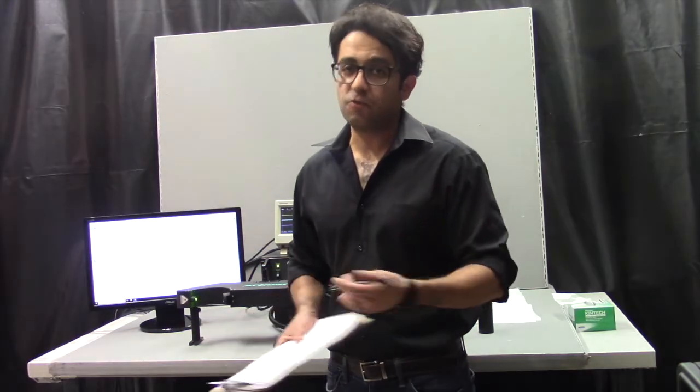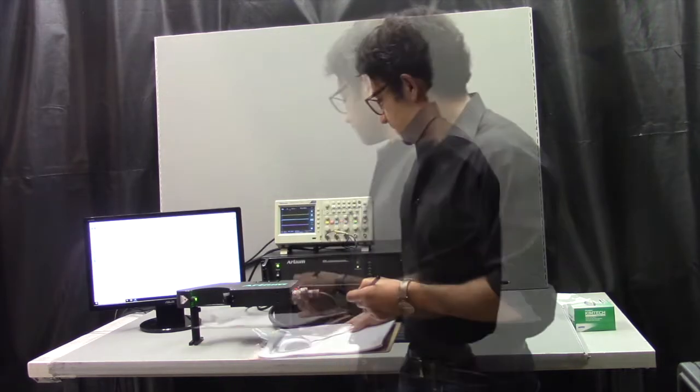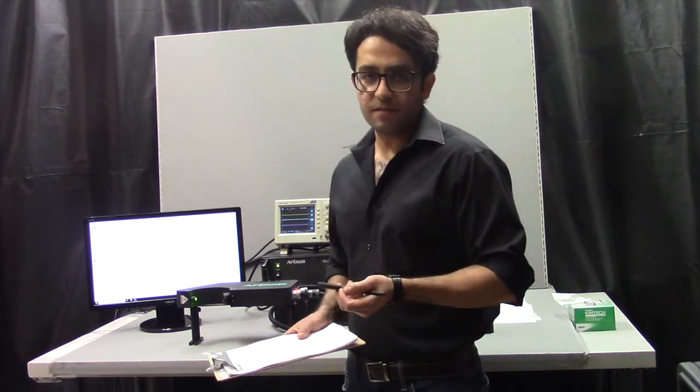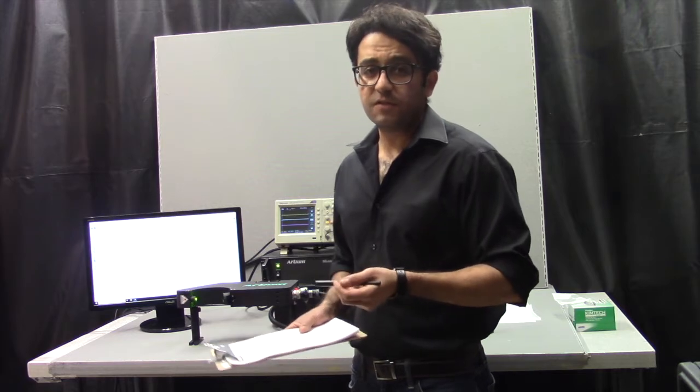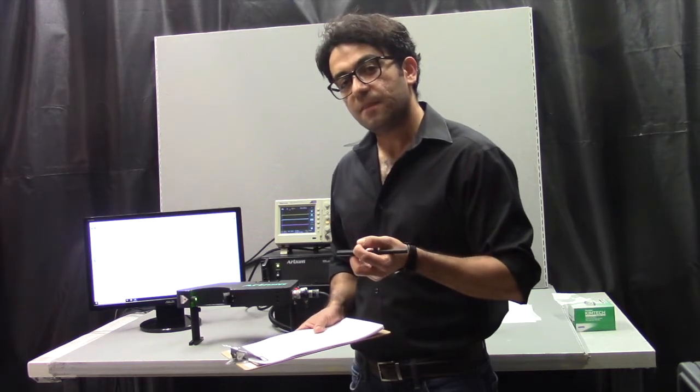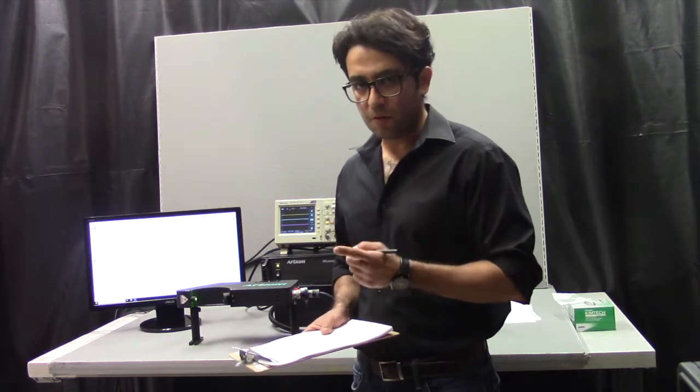Therefore, it doesn't require any alignment. We align it here in the factory and we ship it to you and you can turn the key and start using it. The TK is a 1D system. It means that it measures the size of the droplets and it also measures one component of velocity.